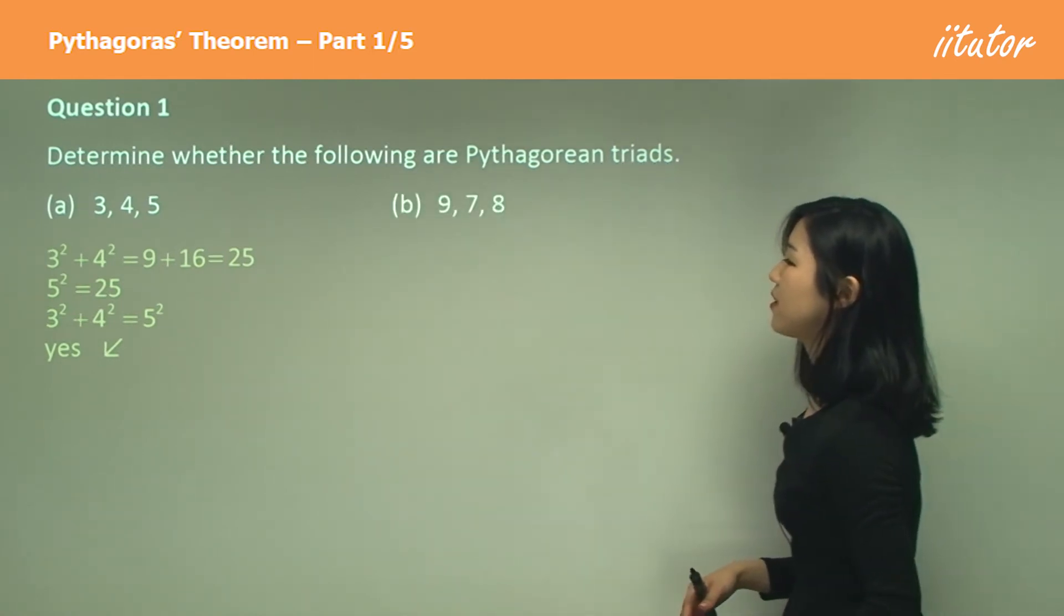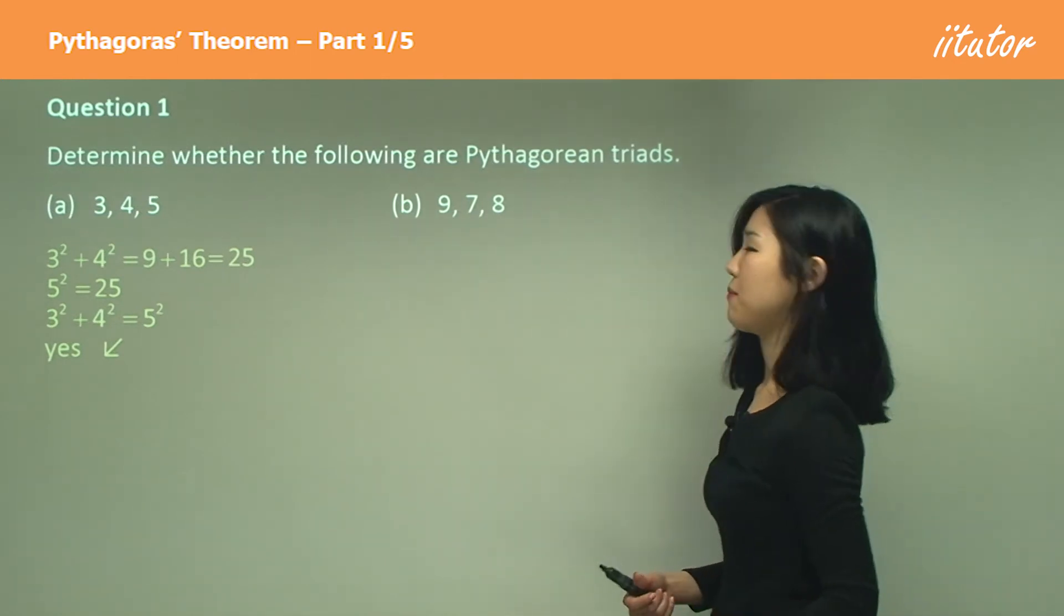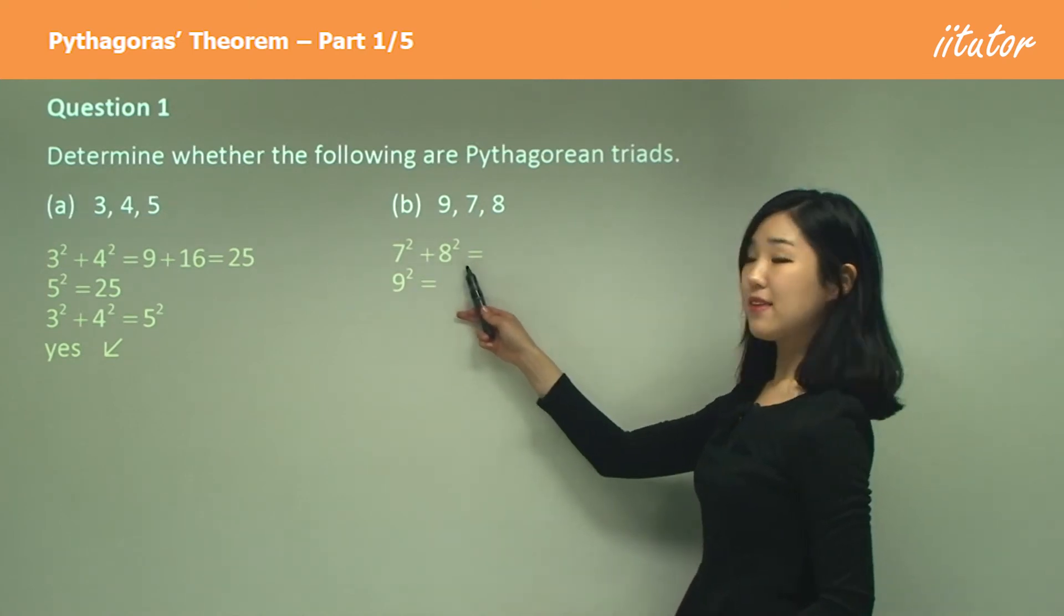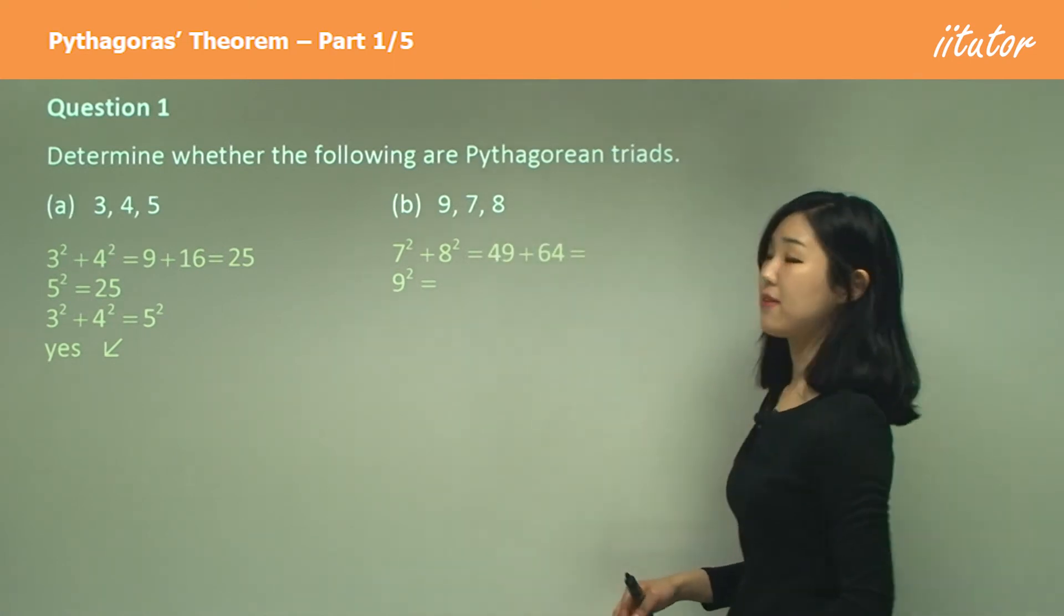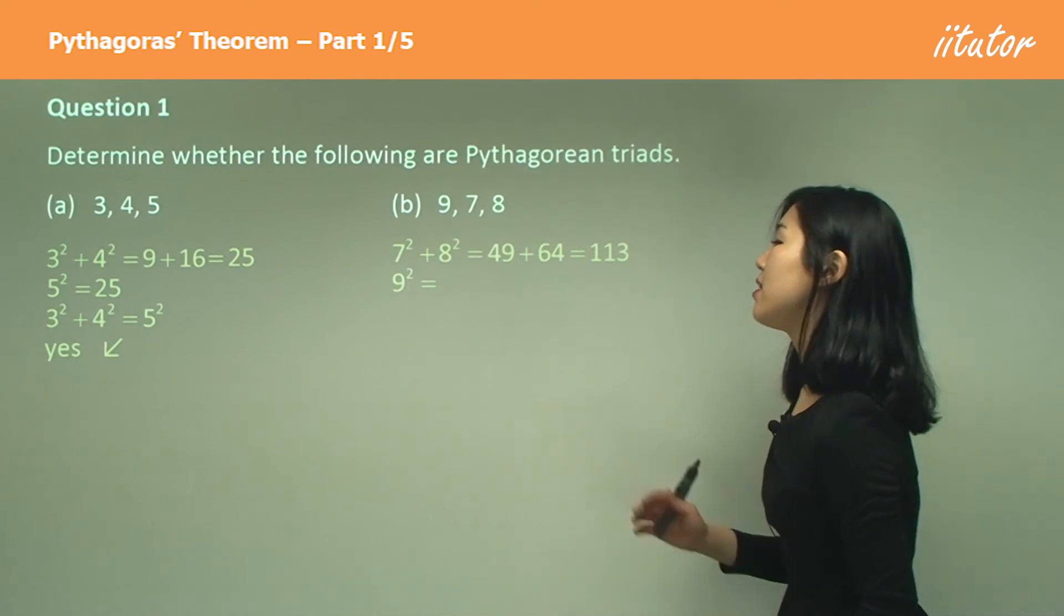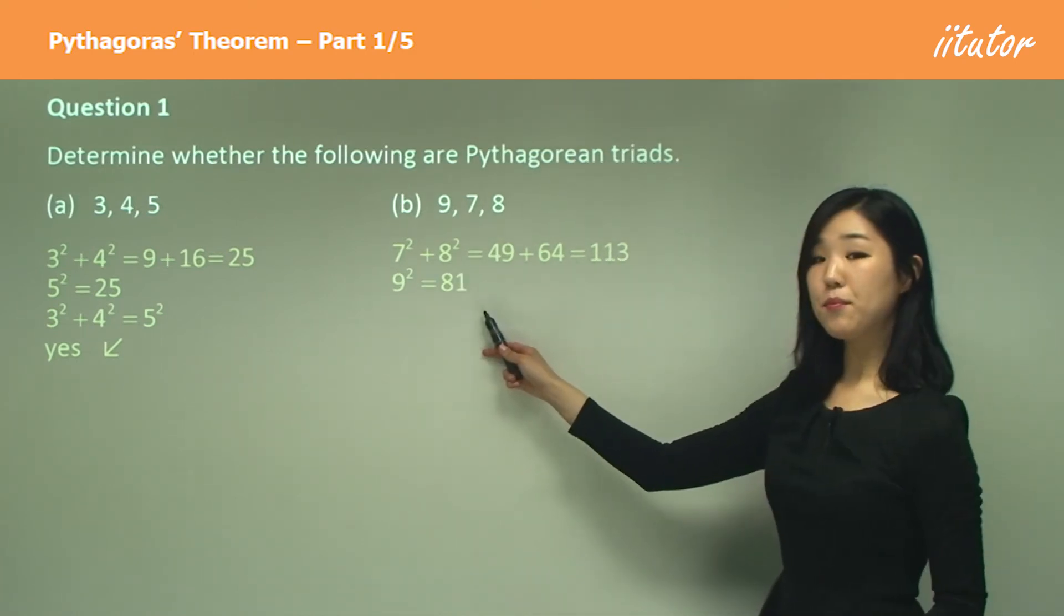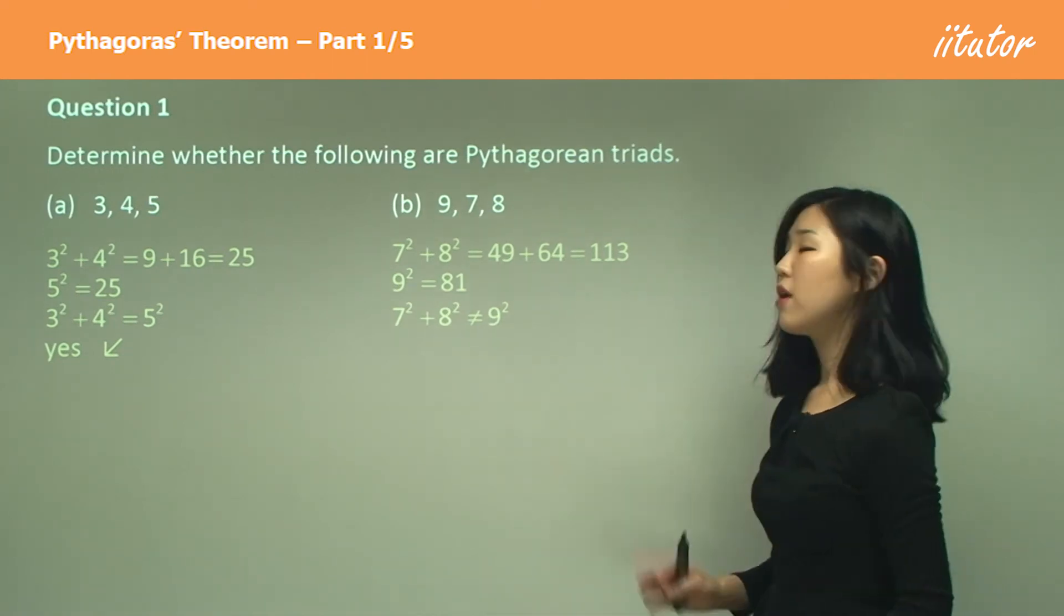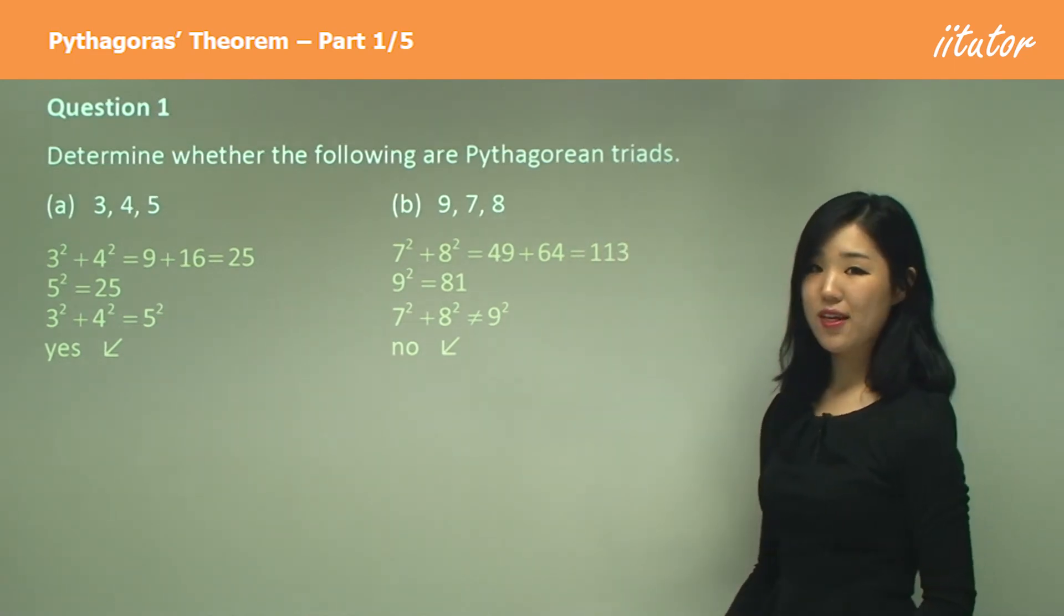Let's try another one. In this case, what's the hypotenuse going to be? What's the largest number? It's nine. So we must have seven squared plus eight squared equal to nine squared. Let's start with this one. That's 49 plus 64, and you add them up. That's 113. Now nine squared is 81. Compare—are they the same? They are not the same. They're not identical. So therefore it is not a Pythagorean triad. That's all you need to do.